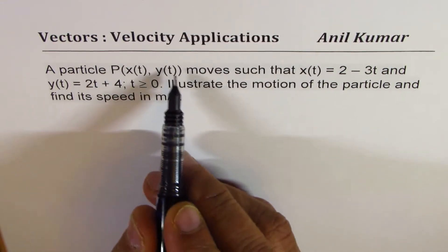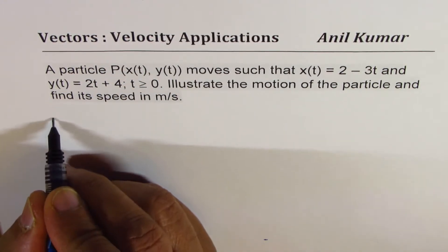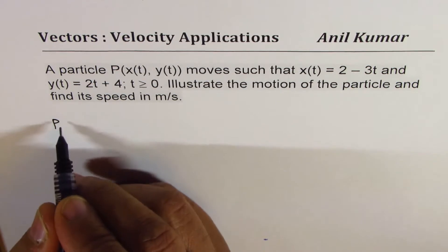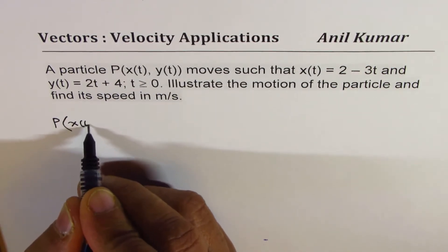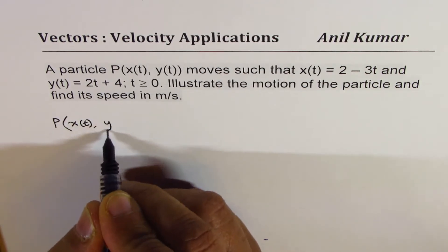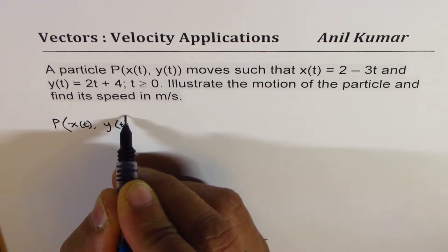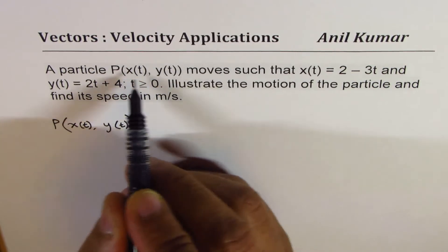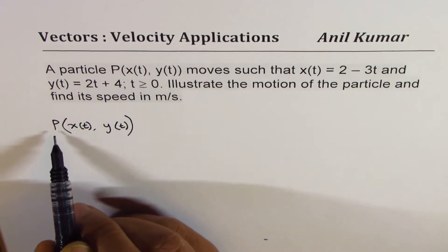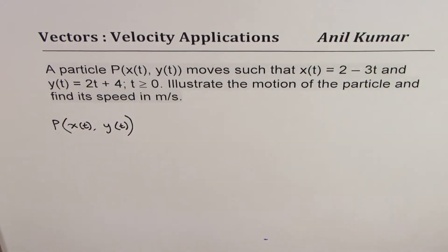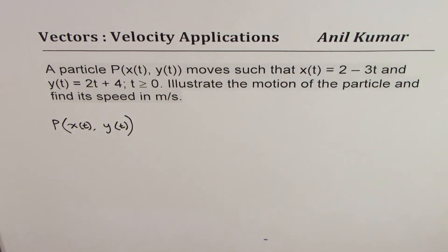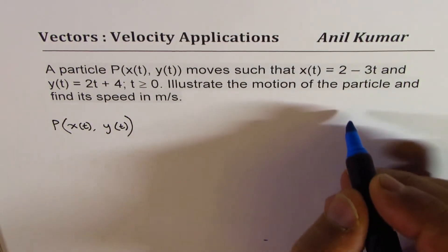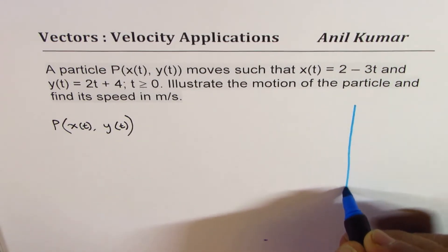Let's try to understand the function itself. It's written as position function P in terms of x and y, and x is a function of time, y is also a function of time. Do you get this part? Position is a function of time—that's what we're trying to say here.